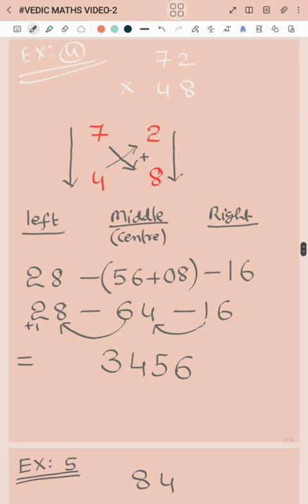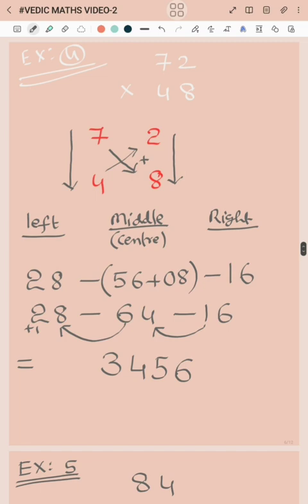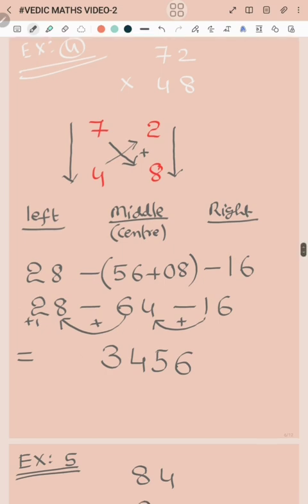Example 4: 72 into 48. We have a hyphen, that is not minus, dear students. It is a center line. Multiply left side numbers: 7 into 4 is 28. Corner numbers multiply and add: 7 into 8 is 56 plus 4 into 2 is 8, we add 64. Right side: 2 into 8 is 16. Now do balancing: 6, then 1 plus 4 is 5, and 6 plus 8 is 14, so we write 4 and carry 1, making 3,456.